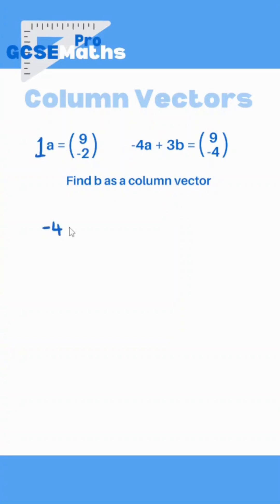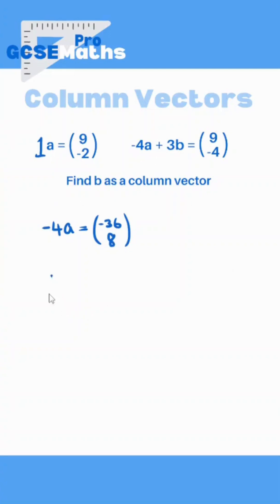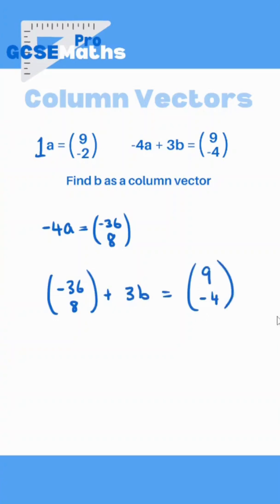So -4a means I need to multiply both numbers in the a vector by -4. 9 times -4 is -36, and then -2 times -4 is actually positive 8. So that's the -4a part. They've taken this and added 3b, which we don't know, and that gives us (9, -4).